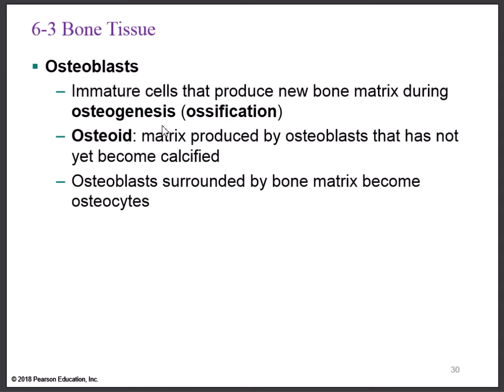That brings us to the osteoblast. A 'blast' cell is an immature precursor cell that will develop or change into a different type of cell. Osteoblasts produce new bone — the process of producing new bone is known as ossification or osteogenesis. When osteoblasts produce their matrix, the matrix doesn't come out hard right away; that process is called calcification. The uncalcified matrix is called the osteoid.